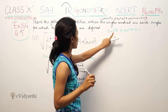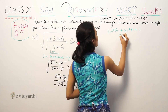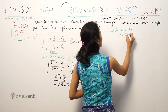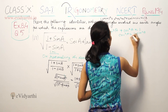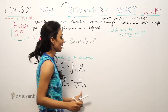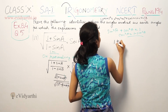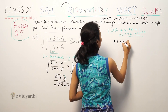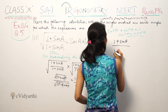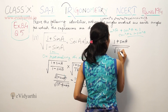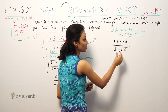So 1 minus sin squared A becomes cos squared A. Therefore we have (1 plus sin A) upon cos squared A under root, which gives us (1 plus sin A) upon cos A.